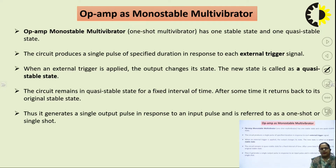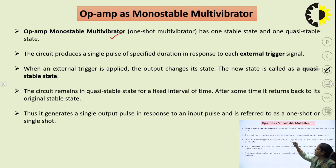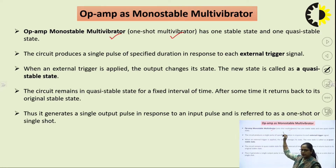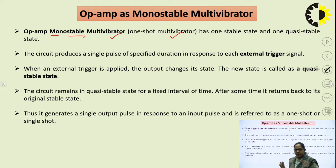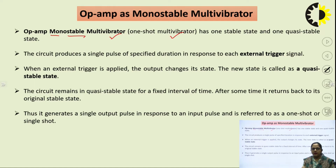What is a monostable multivibrator? It is a circuit also known as a one-shot multivibrator. As the name indicates — mono means single — at the output of this multivibrator, we will have only one stable state.